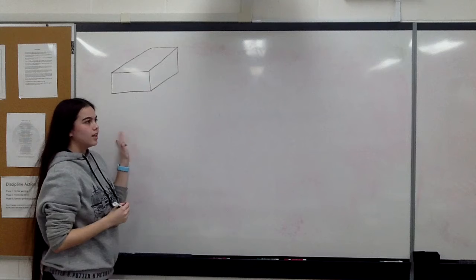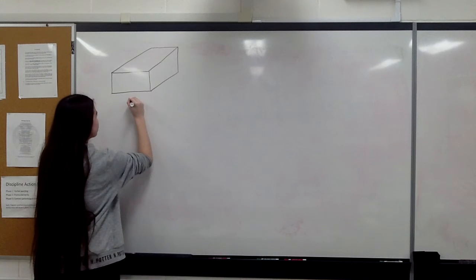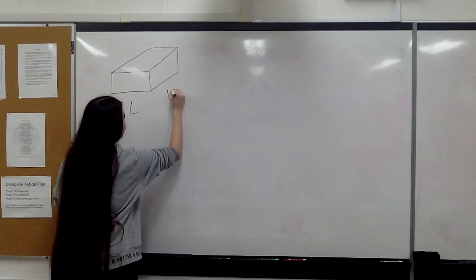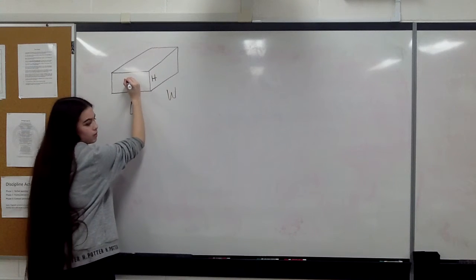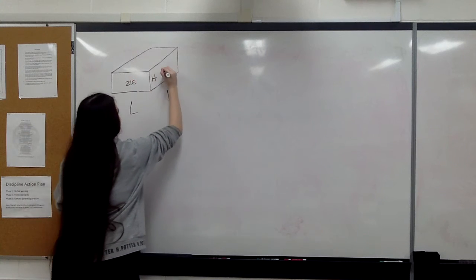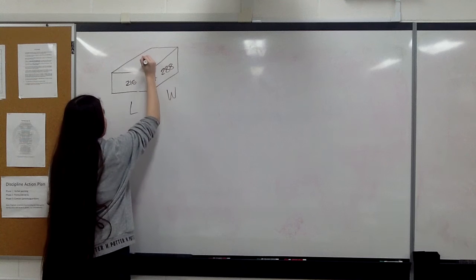Then label your length, width, and height and the areas that were given in the problem. Here's your length, here's your width, here's your height. We're given the front area was 216, this side area was 288, and this top area was 432.